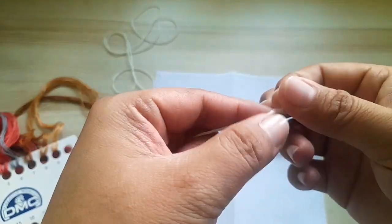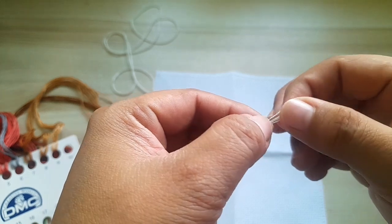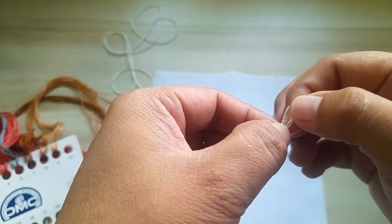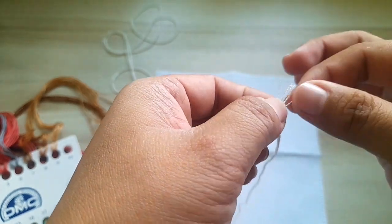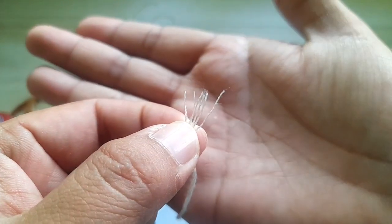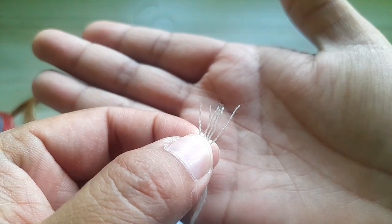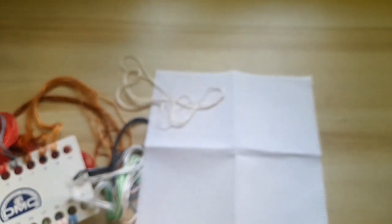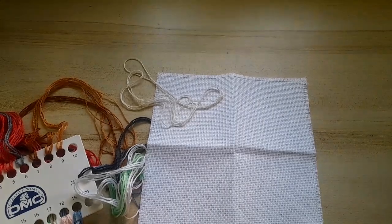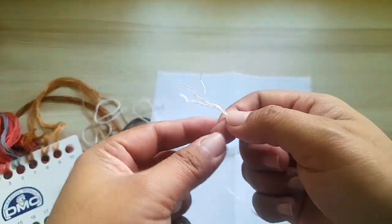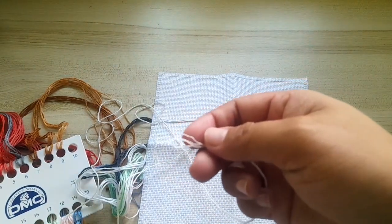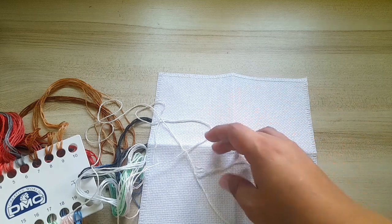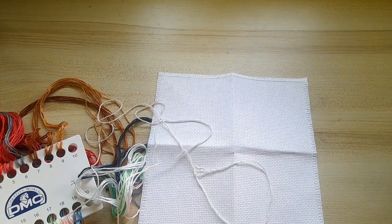You all can see in one meter length there was six strands of thread. We are using Aida 14 so I'm pulling out two strands because the size of its hole is small.